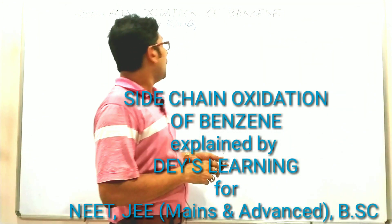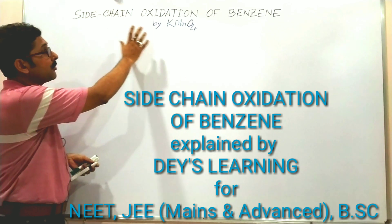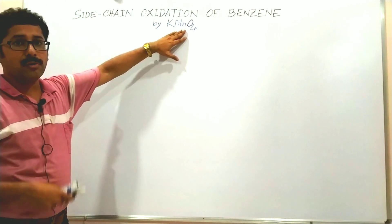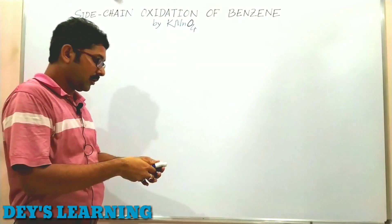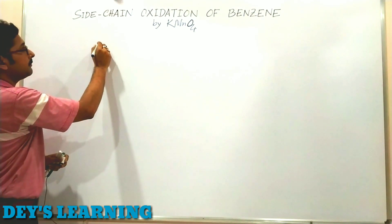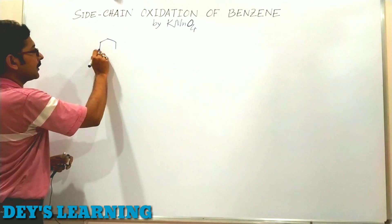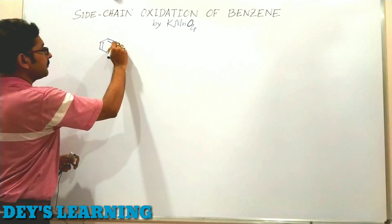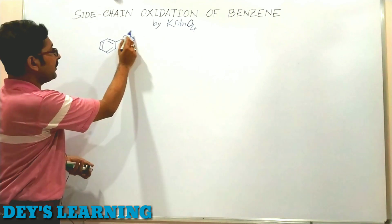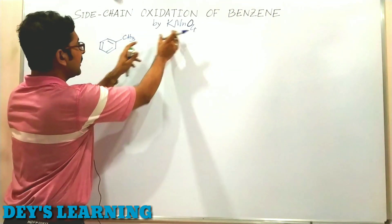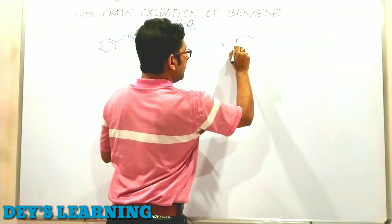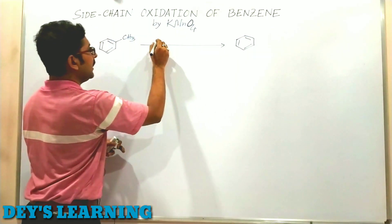Hello students. Today's lesson is sidechain oxidation of benzene by KMnO₄. KMnO₄ is a very strong oxidizing agent — it can oxidize almost everything. Coming to our topic: sidechain oxidation of benzene. This is our benzene ring with a methyl group, so the molecule is toluene. This methyl group is the side chain, and KMnO₄ can oxidize this side chain to carboxylic acid if we treat toluene with alkaline KMnO₄.